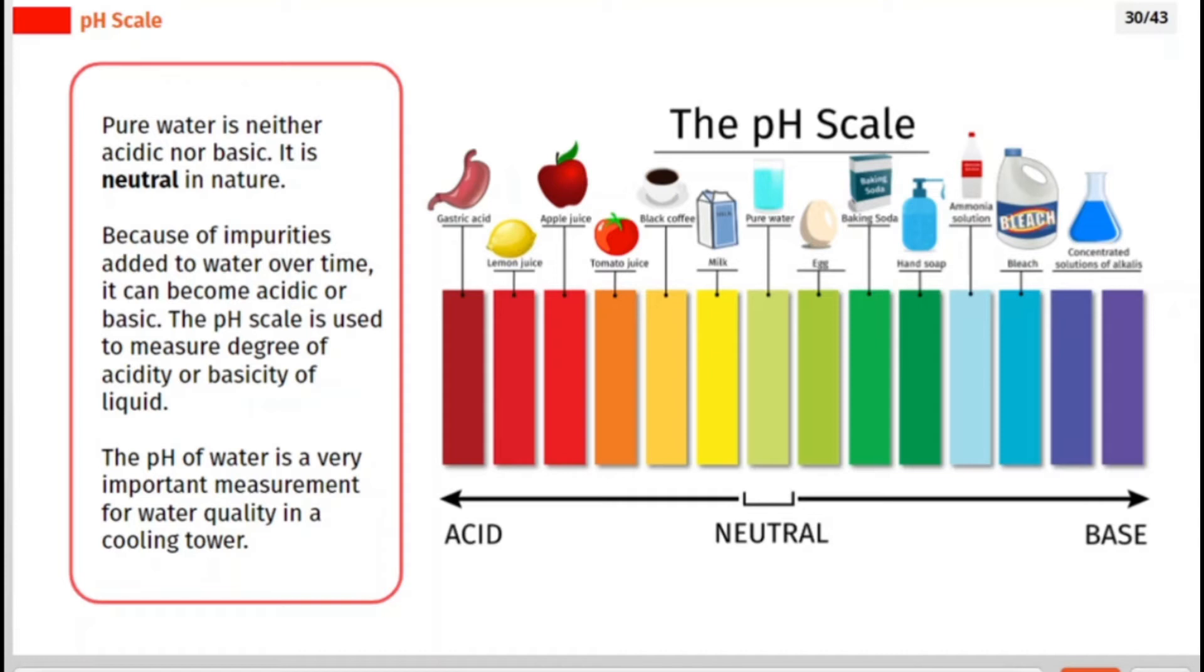The pH scale is used to measure degree of acidity or basicity of liquid. The pH of water is a very important measurement for water quality in a cooling tower.